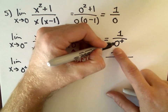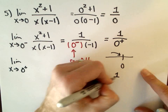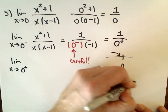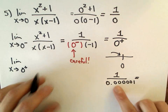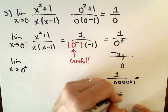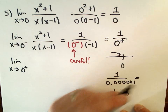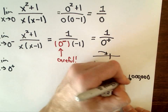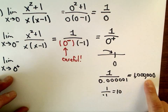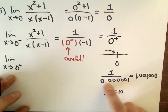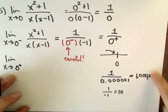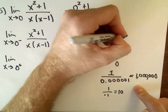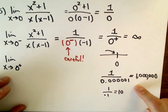If you take one and divide it by a number that's really close to zero but positive — think about one divided by 0.0001 — you get a very large number. One divided by 0.1 is 10; the smaller the denominator, the larger the result. So the left-hand limit, one divided by a small positive number, goes to positive infinity.